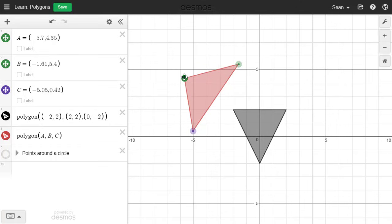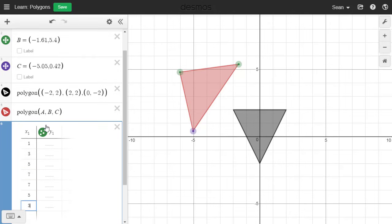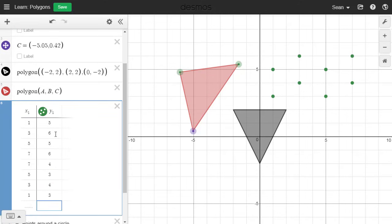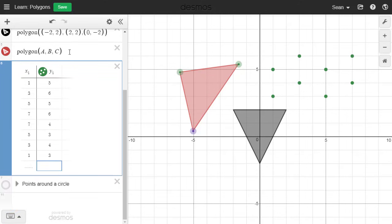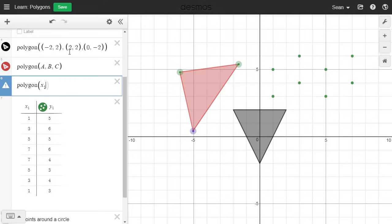You can also make a polygon from lists of separate x and y coordinates. Add a table with as many points as you want. Then make that whole table into a polygon by typing polygon open parentheses x1 y1. Make sure to use the same names that are in your table header.